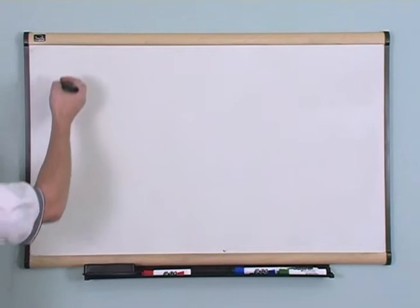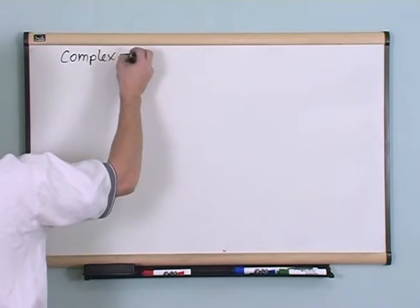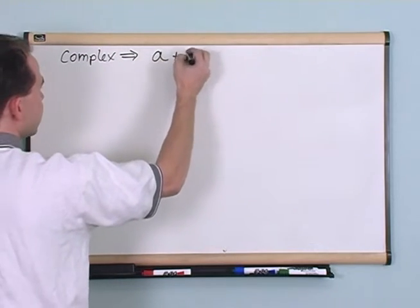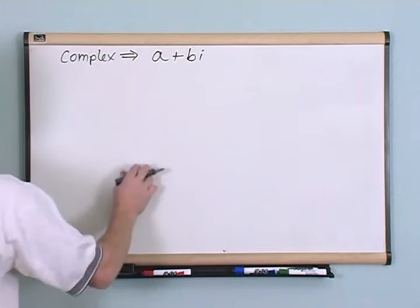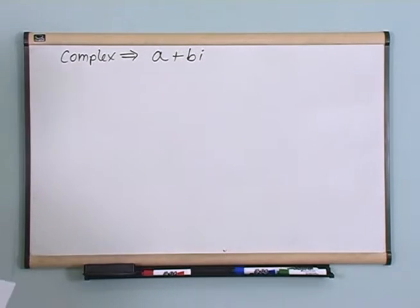So as I already mentioned, the general form of a complex number is a plus bi. This is a number plus some number times that thing that mathematicians made up called i.